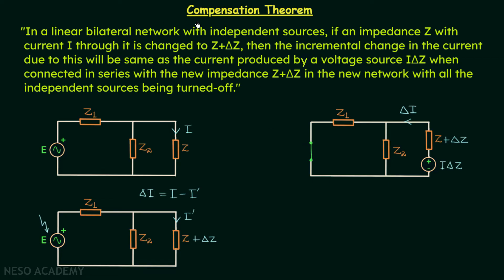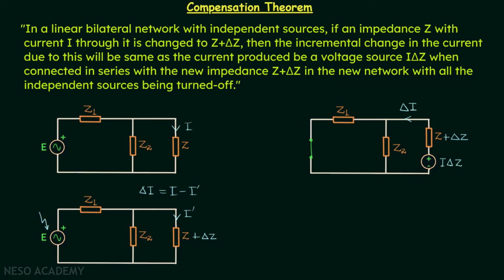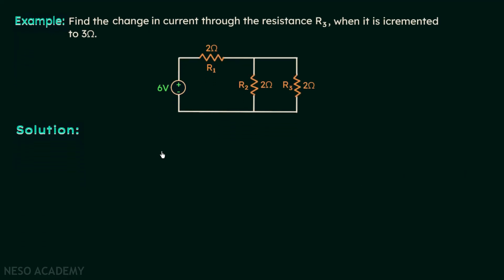So I hope you now understand what the compensation theorem is. To demonstrate the implementation, I have taken one example problem. In this problem we are required to find the change in current through resistance R3 when it is incremented to 3 ohms. Initially R3 is equal to 2 ohms, and we need to find the change in current through R3 when it is incremented to 3 ohms. We can use the compensation theorem to solve this.